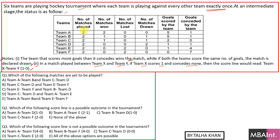Looking at the table, the number of matches played by each team is two. We also have the number of matches won, lost, and drawn by each team. The first question asks which of the following matches are yet to be played. The second question asks which of the following score lines is a possible outcome at this intermediate stage.